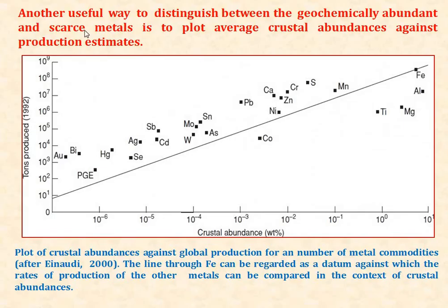This is another useful way to distinguish between geochemically abundant and scarce metals — to plot average crustal abundance against production estimate. Elements which are having higher abundance have higher production, and less abundance means less production.